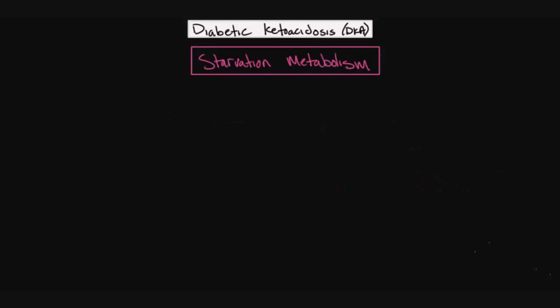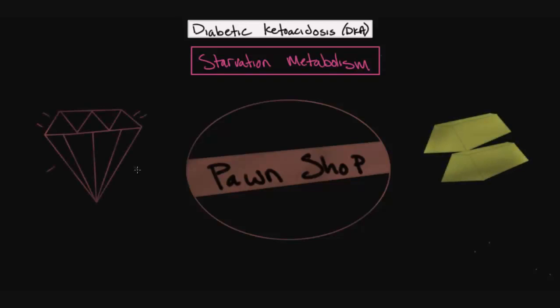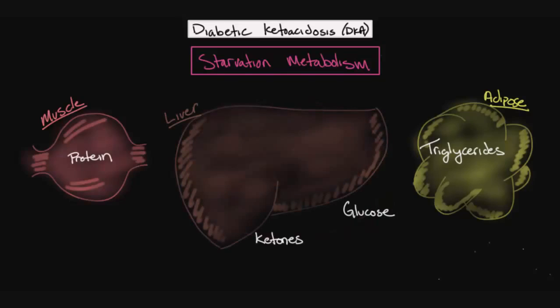Now, in order to understand the clinical presentation of diabetic ketoacidosis, we need to discuss a few metabolic pathways that occur throughout the body. So I like to think of metabolism as being similar to a pawn shop. At a pawn shop, the goal is to convert different items of value, such as precious stones or gold, into a usable form of currency, in the form of cash. Now, in metabolism, there are many different forms of energy, such as proteins in muscle, and the triglycerides or lipids that are in adipose tissue. However, as I just mentioned, they're not usable by the brain, so they need to be converted into usable forms of energy, such as glucose and ketones. And this most commonly occurs within the liver, which can be thought of as the metabolic pawn shop.